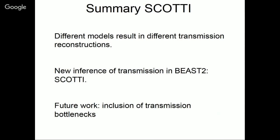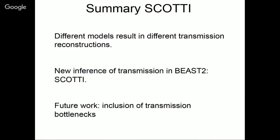To conclude: I've shown different methods to infer transmission between hosts and that different methods can draw very different conclusions. SCOTTI models within-host evolution and non-sampled cases, is implemented in BEAST2, and future work will focus on improving accuracy by including transmission bottlenecks, specifying epidemiological priors, and possibly incorporating contact networks. Thank you very much for listening.